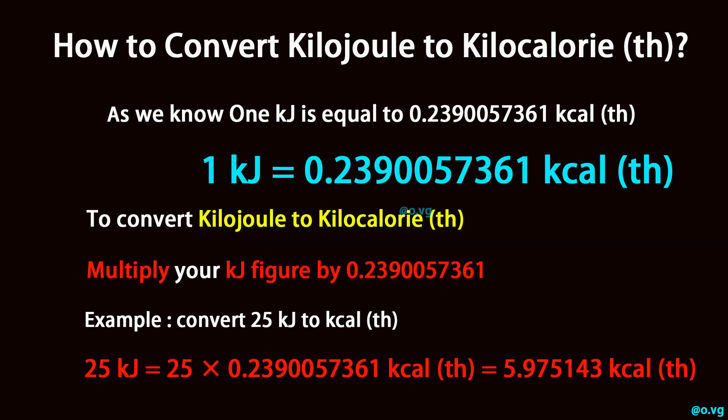To convert kilocalorie to kilojoule, divide your kilocalorie figure by 0.2390057361.